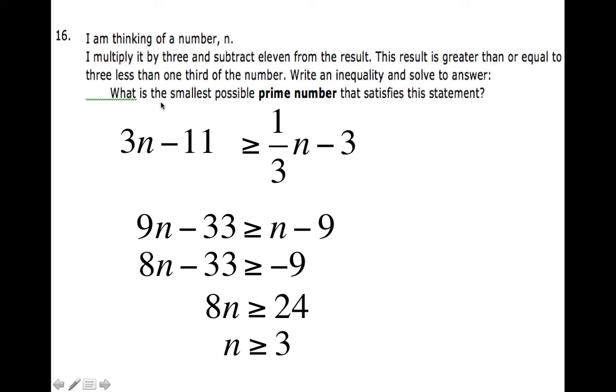The question says what is the smallest possible prime number that satisfies this. So I'm looking for, if n can be any number 3, 4, 5, 6, what's the smallest prime in there? Well, it turns out 3 is, and n is greater than or equal to 3, so 3 is the prime number. That is the answer to this question, the smallest prime number that works.